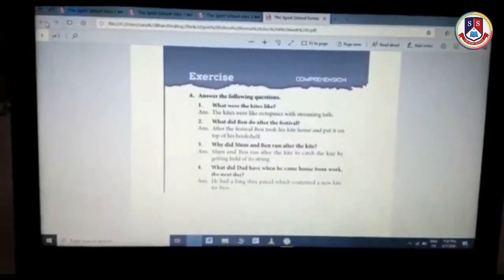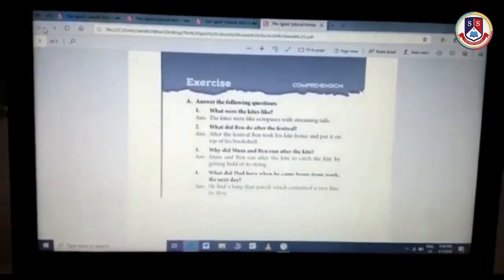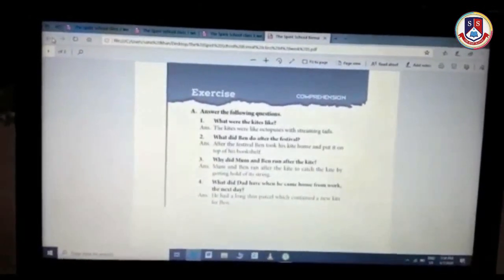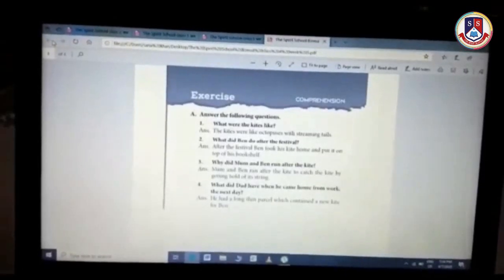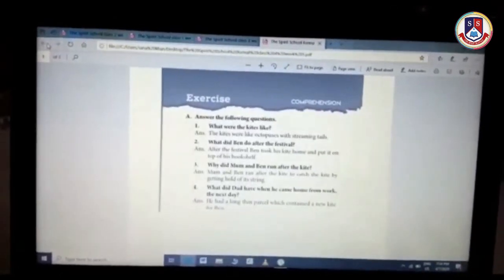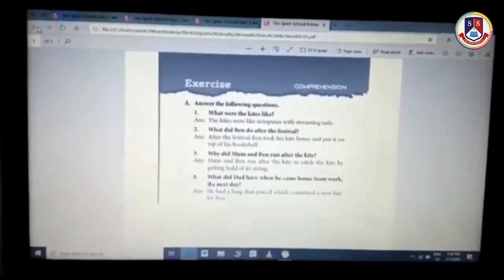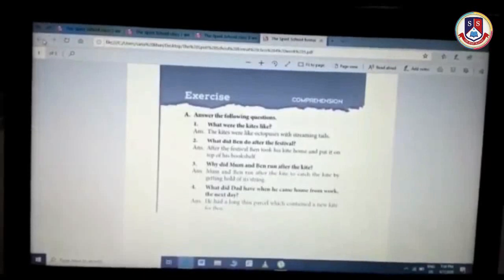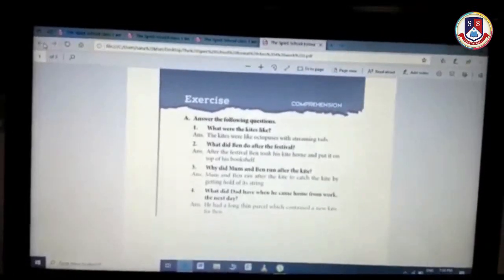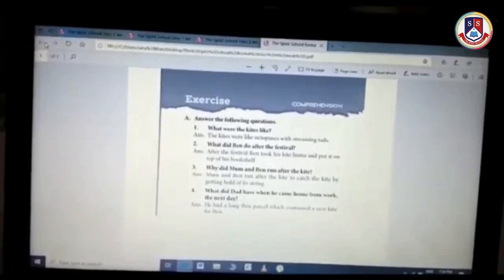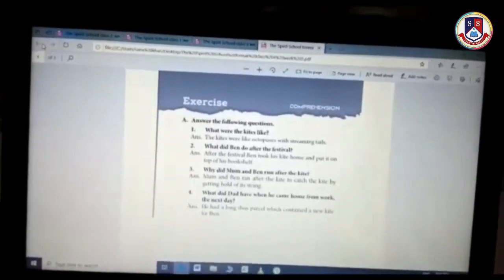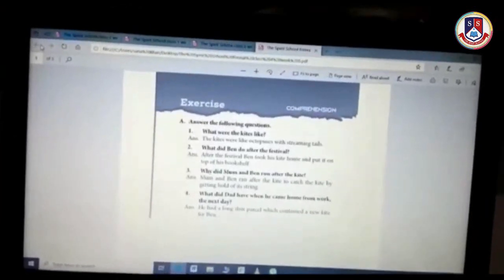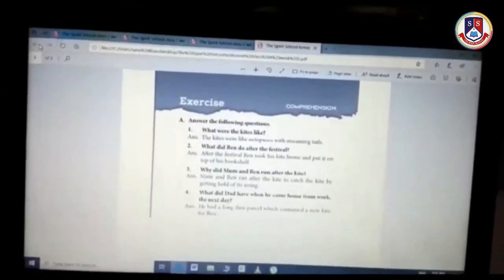Answer the following questions. Our first question is: What were the kites like? Patang kis tarah ki thi - this means, what were the shapes of the kites? The kites were like octopus with streaming tails. As you all know what is octopus - with streaming tails means the tail was like a flowing stream.